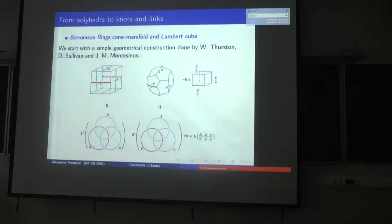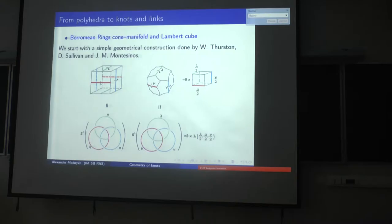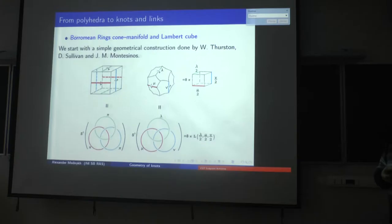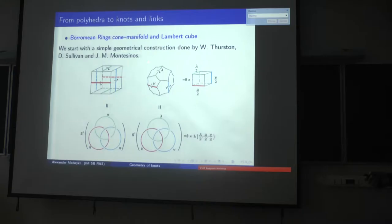The subjects I want to investigate are knots, links, and polyhedra. The idea is to look at these three subjects from a unified point of view — namely, to make some geometrical realization of these objects, usually in hyperbolic space, but sometimes in spherical space or Euclidean space. After that, I prefer to investigate some geometrical invariants such as volume, lengths of particular geodesics, and other invariants. I start with a known example essentially due to Gromov, though Sullivan first used this interpretation, and some results were also obtained by Professor Dinger.